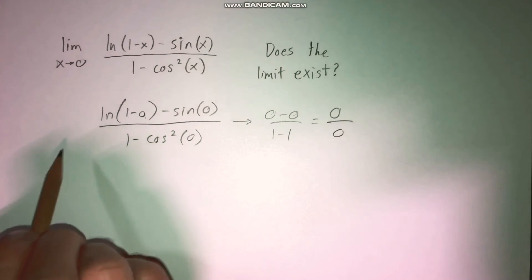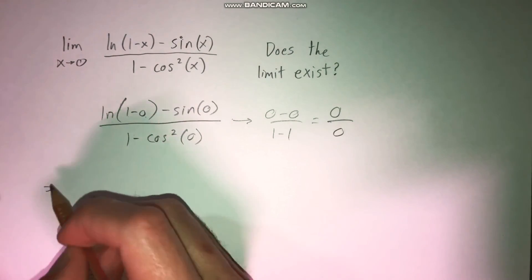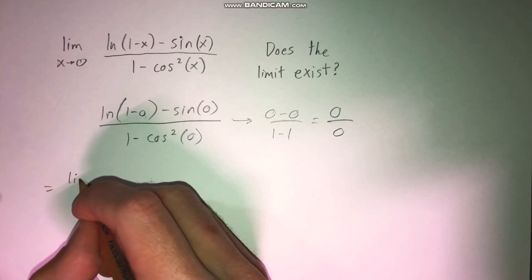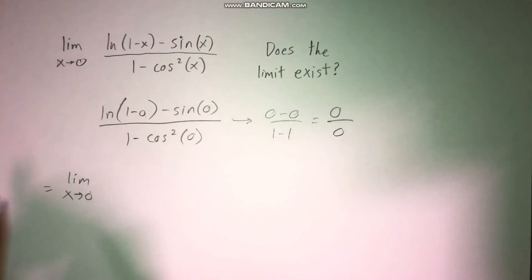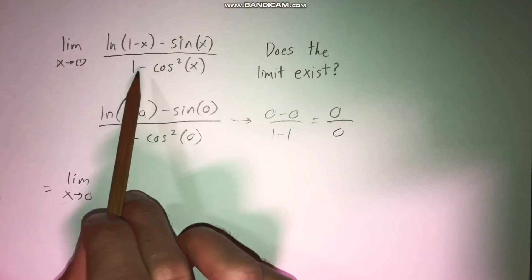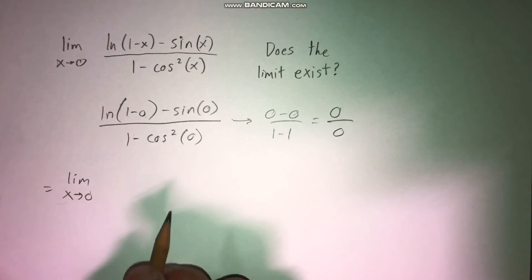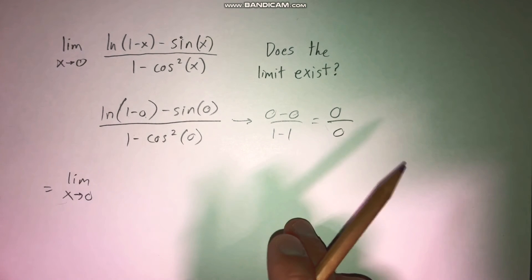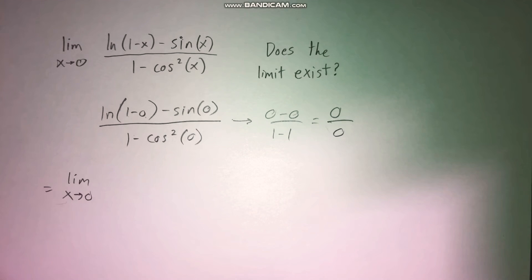What that tells us is we can actually use L'Hôpital's rule to evaluate this limit. L'Hôpital's rule tells us that if we take the derivative of the top and bottom of our fraction, we can instead take the limit as x goes to zero of that new fraction, and that'll be equivalent to our original limit. We're only allowed to do this because we get the indeterminate form zero over zero — you could also do it if you get infinity over infinity, or positive or negative infinity over positive or negative infinity. But this is one of the cases where we're allowed to do it.